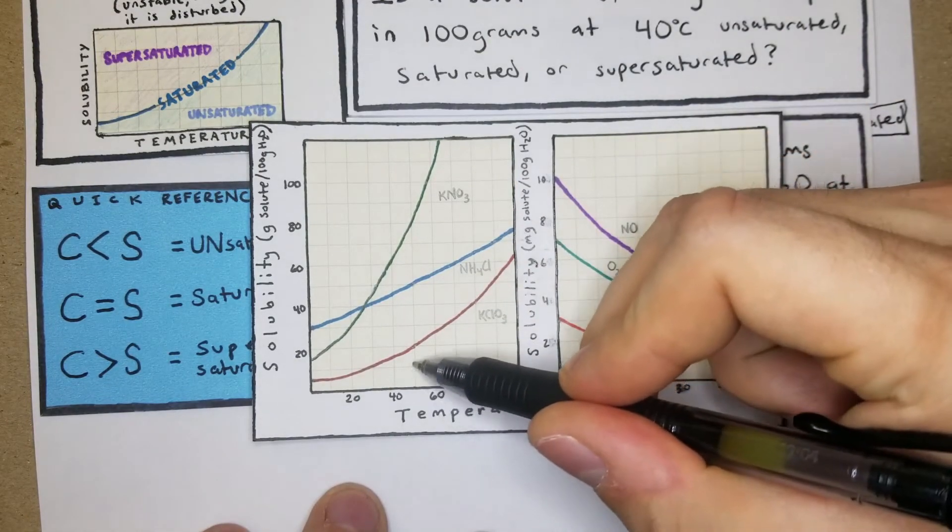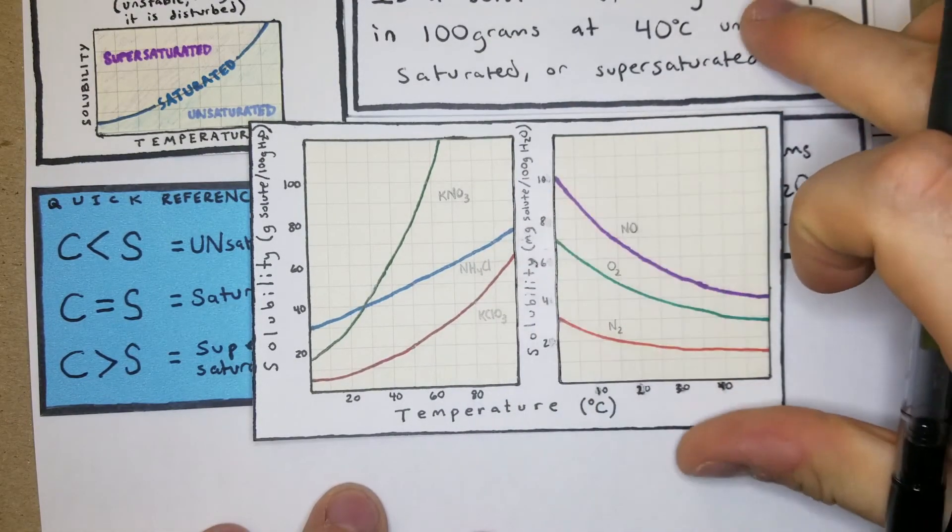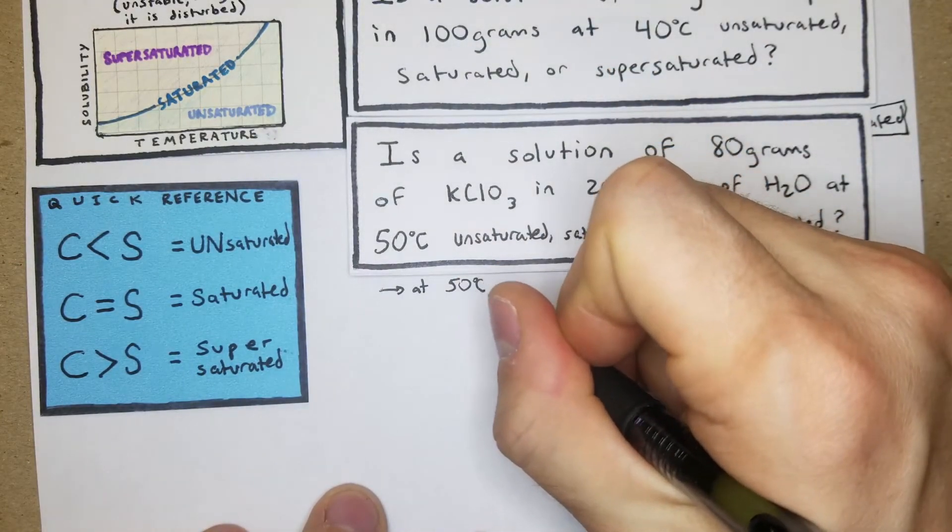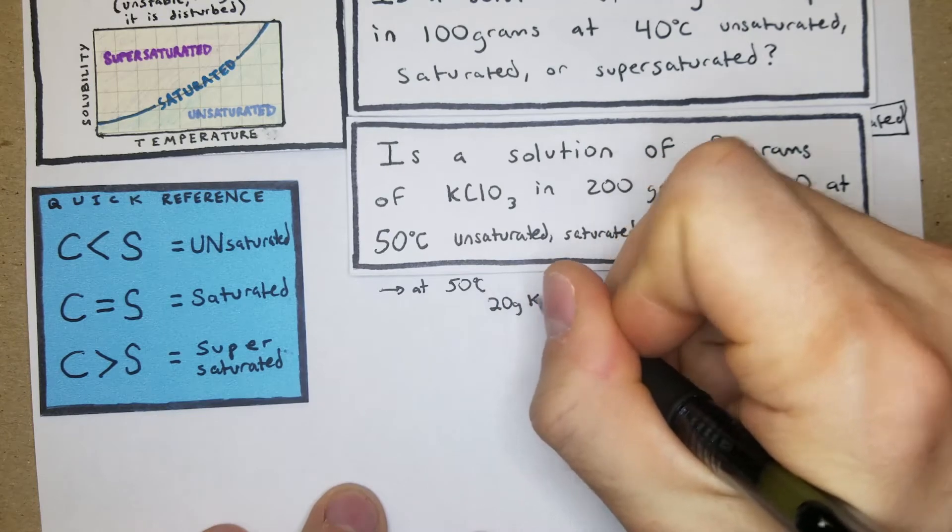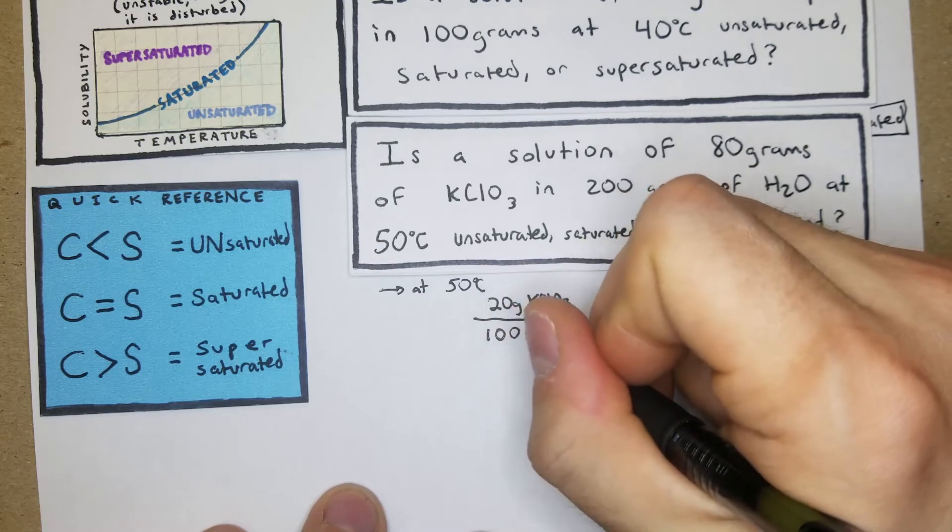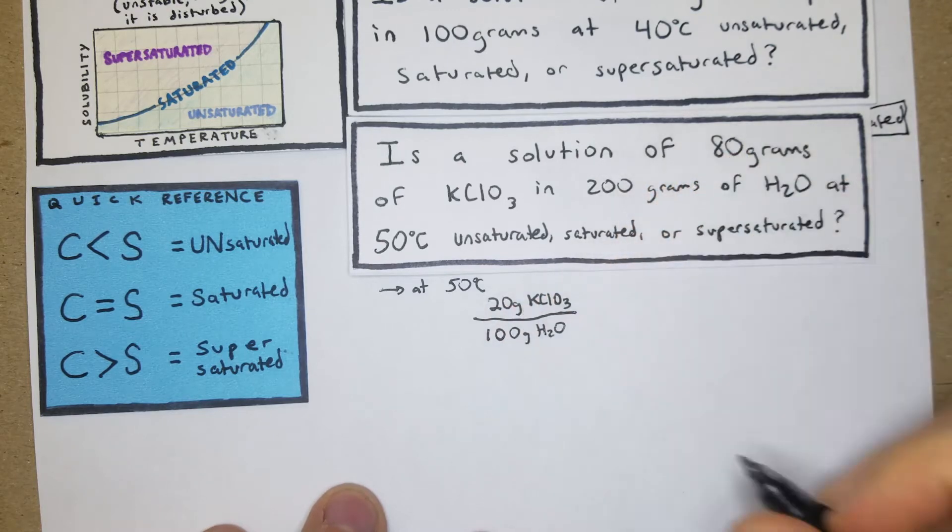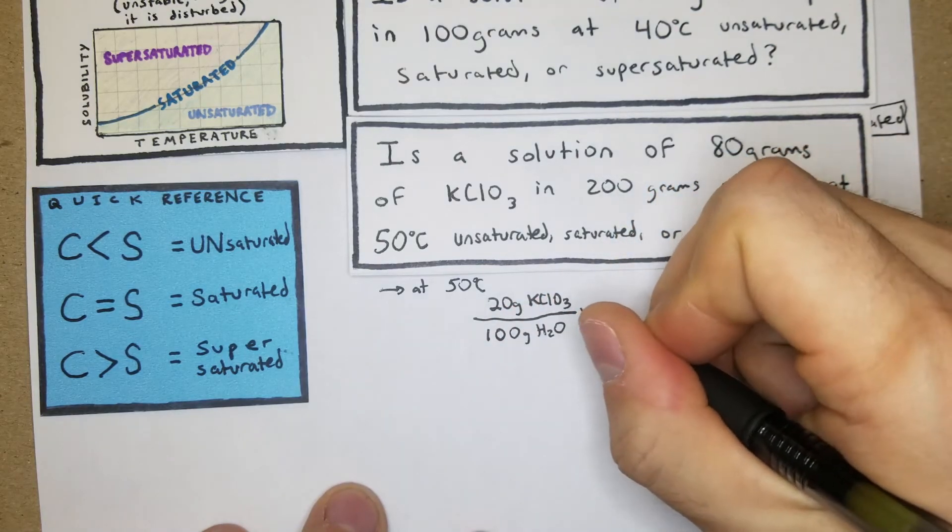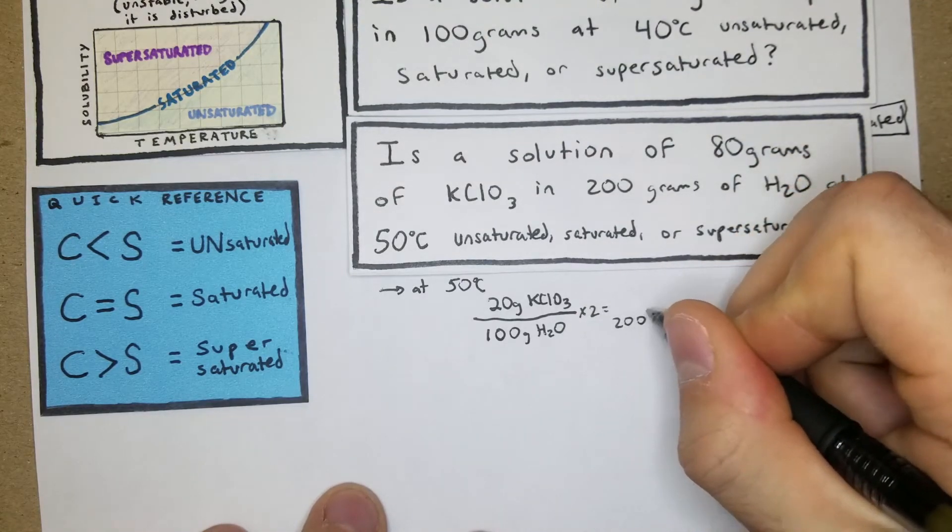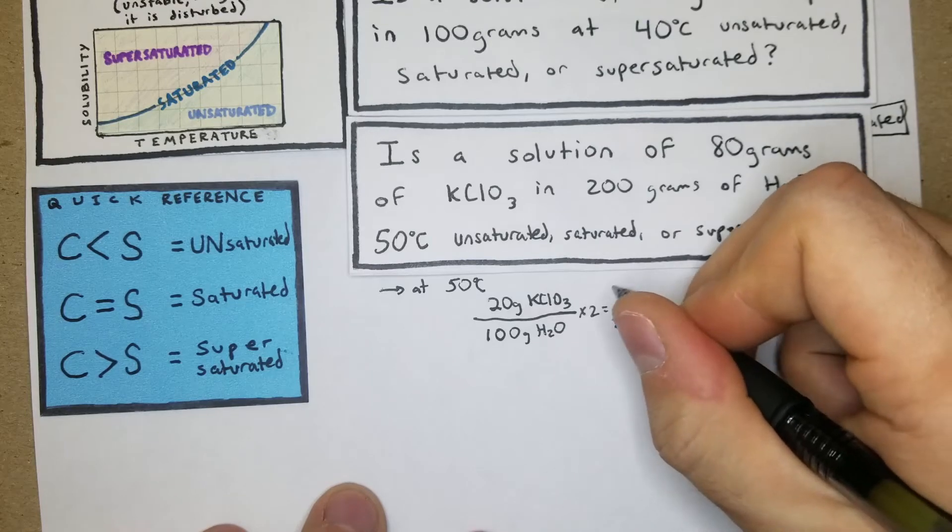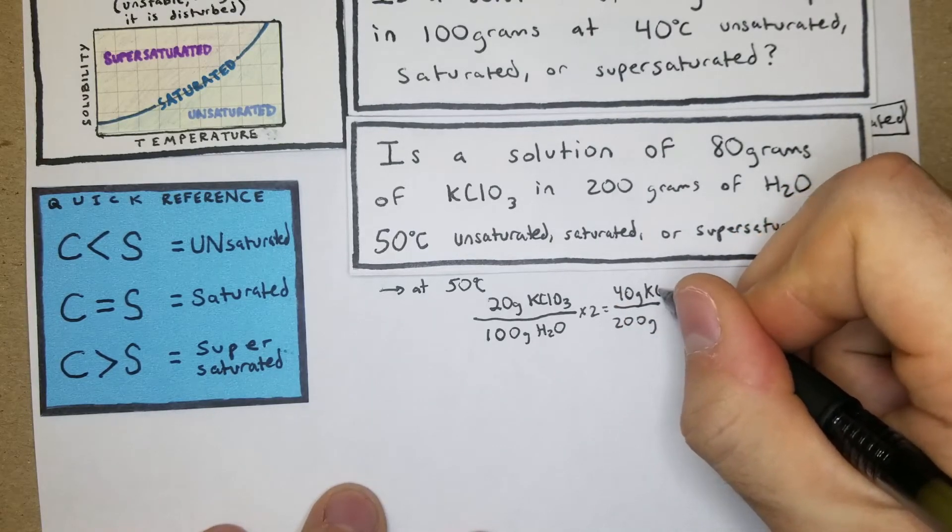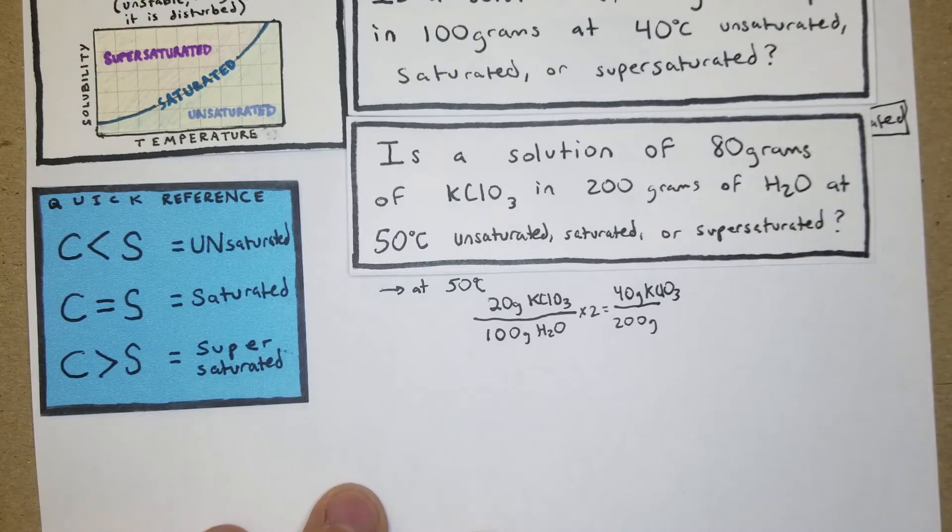KClO3 right here, and at 50 degrees it looks like we're right on the 20. So at 50 degrees, 20 grams of KClO3 will dissolve in 100 grams of water. Let's multiply that by two to see what we can get in 200 grams. At 200 grams of water we should be able to have 40 grams of KClO3.